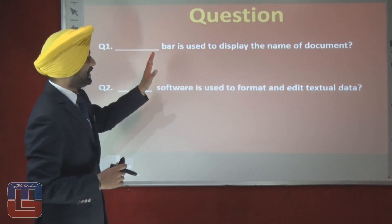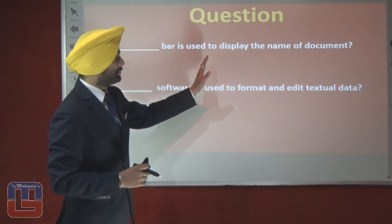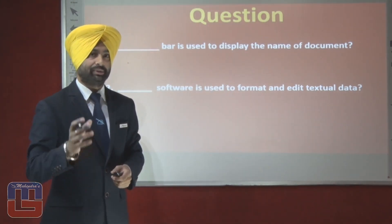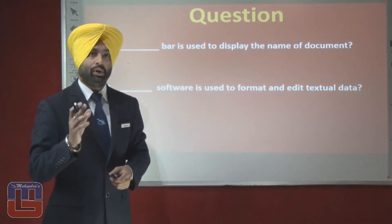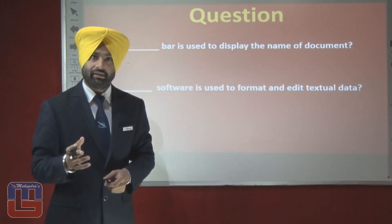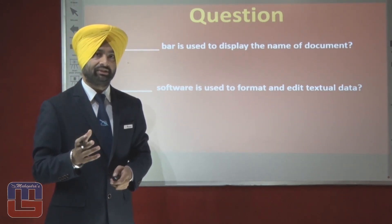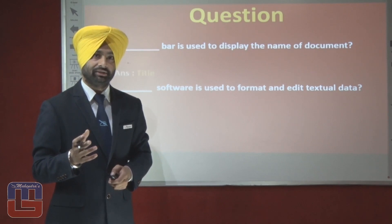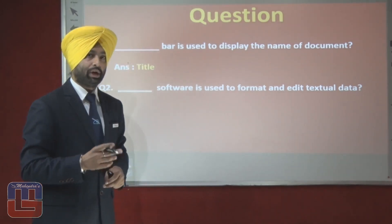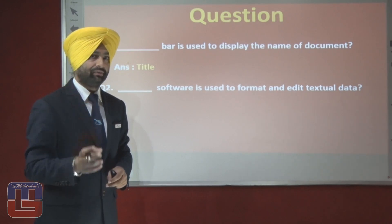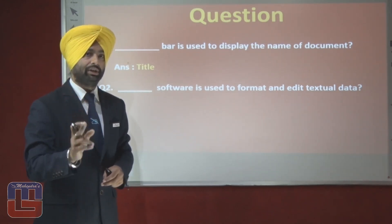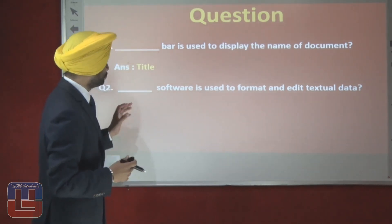Now let's look at a few questions. Question 1: which bar is used to display the name of the document? You know the answer — the correct answer is the title bar. The title bar is the topmost bar of the document window and is used to display the name of the current document.